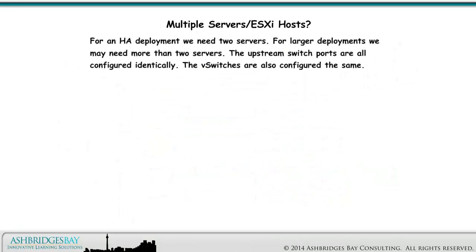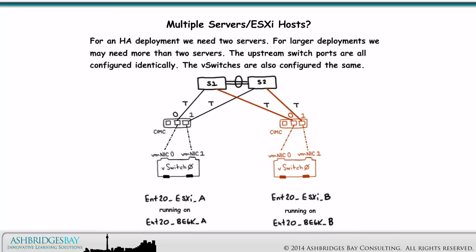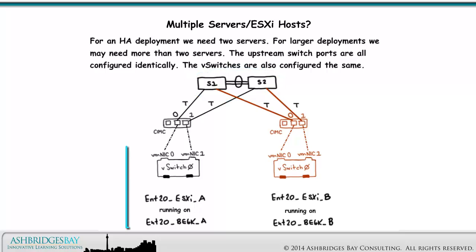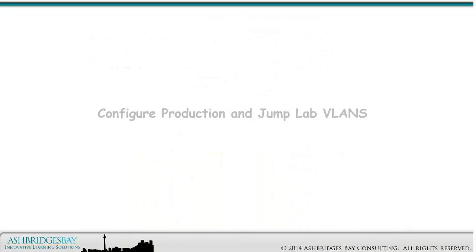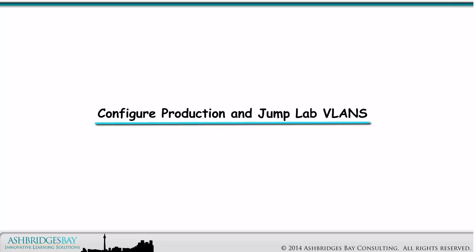For an HA deployment, we need two servers. For larger deployments, we may need more than two servers. The upstream switch ports are all configured identically. The V-switches are also configured the same. The first thing to do is configure the production and Jump Lab VLANs.